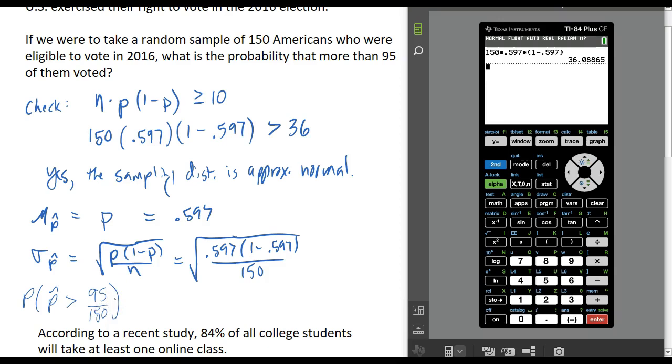95 out of 150 is about 0.633. So our picture is going to look like this: we know that this distribution is approximately normal, and we know the mean is 0.597. So the sample proportion in question would be over here somewhere, 0.633, and we want to find this area under the curve.